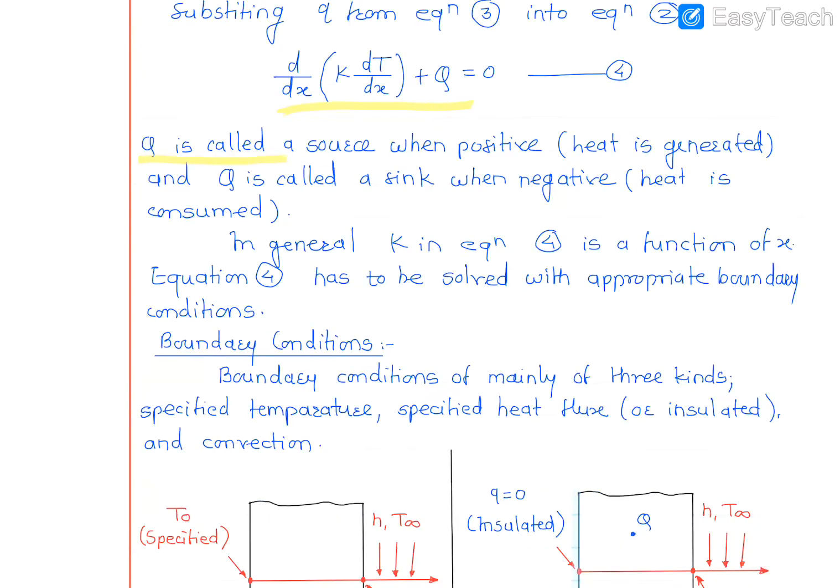Q is called a source when positive (heat is generated), and Q is called a sink when negative (heat is consumed).